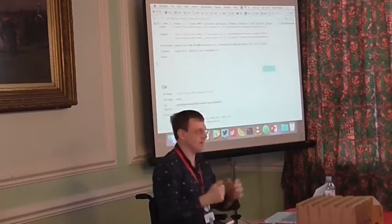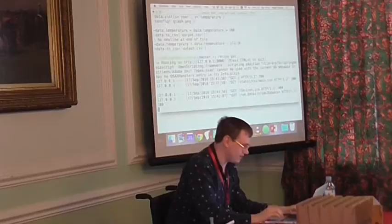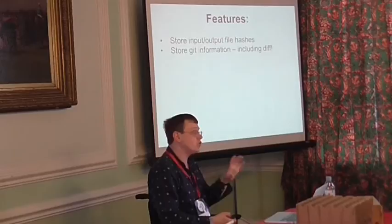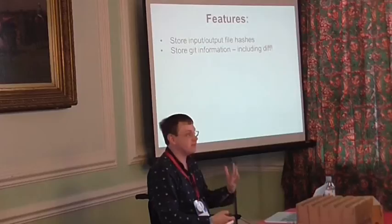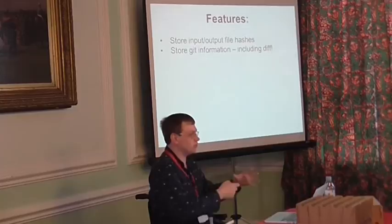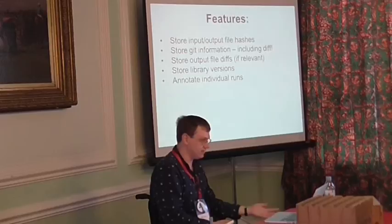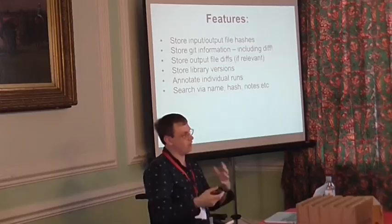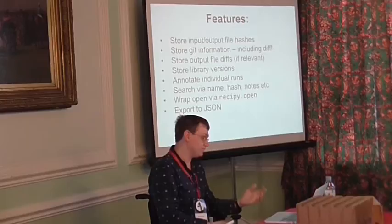That's briefly what Recipy does. The key question really is: how does it actually do this? So, briefly: it deals with file hashes, stores git information, you can look at output and input file diffs if you want — you can turn that on in the configuration. So if you're storing a text format output file, it can give you a diff between what you've created at different times. It stores library versions, you can annotate things, search by various things. You can wrap the Python open command. You can export to JSON. All these things can be turned on and off.